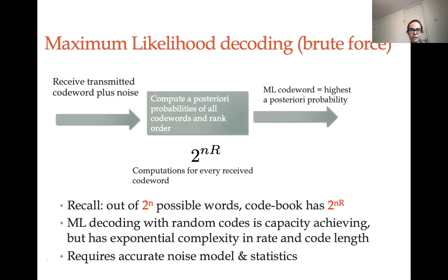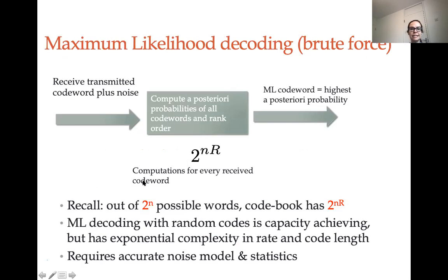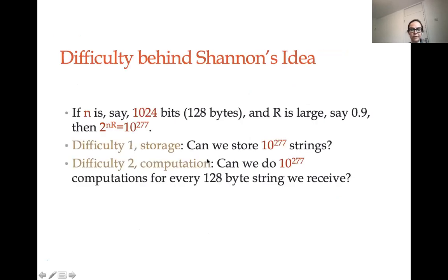If I were to do brute force decoding, I would receive y — the transmitted codeword x plus noise n — compute the posterior probabilities of all codewords, rank-order them and select the highest. I would have to do two to the nR computations every time I receive a y. The ML codeword is the maximum likelihood (or maximum a posteriori with uniform input distributions). If I use the random coding just described, the scheme is capacity achieving, but has exponential complexity both in rate and importantly in code length.